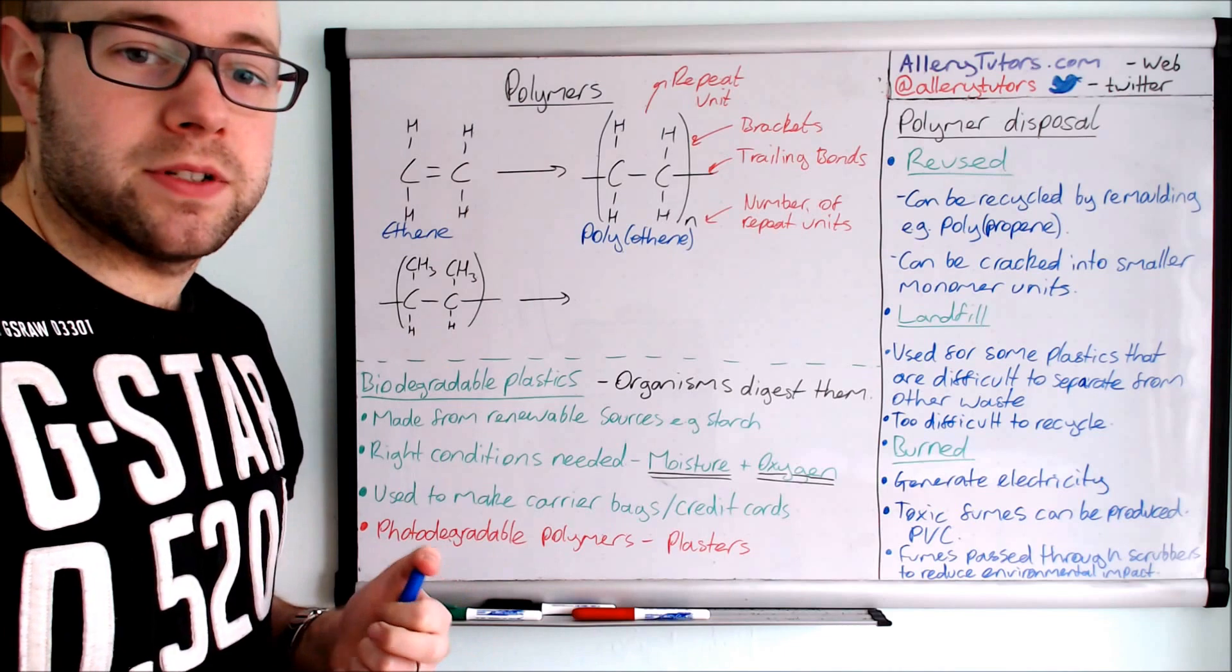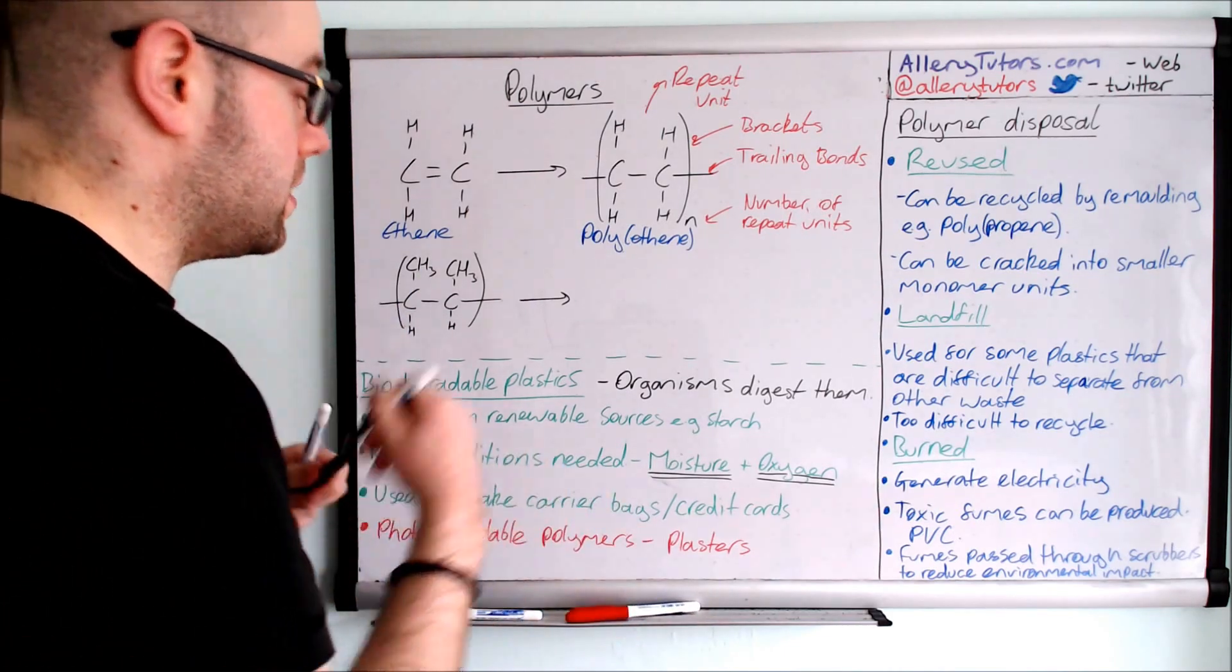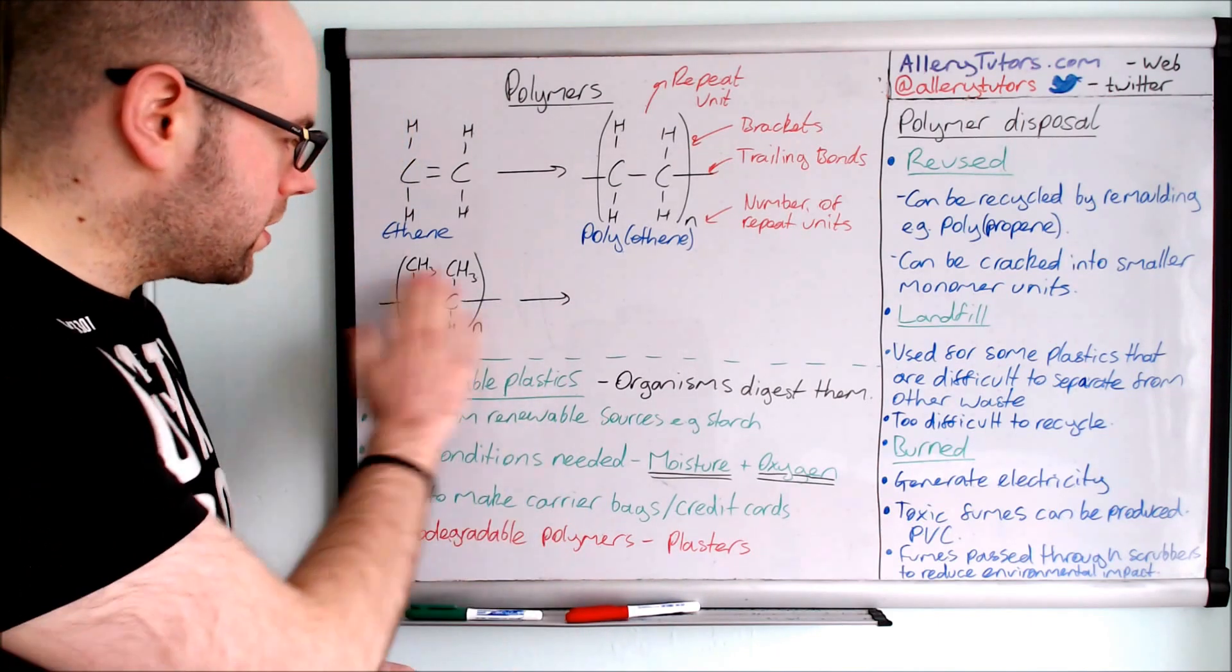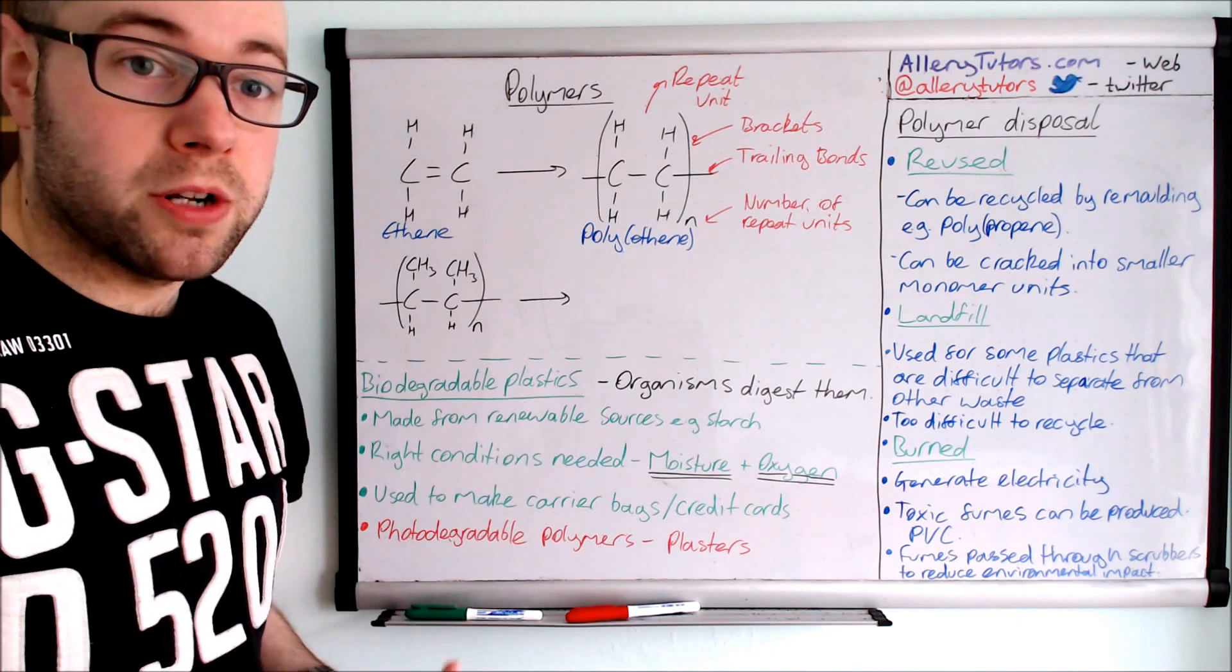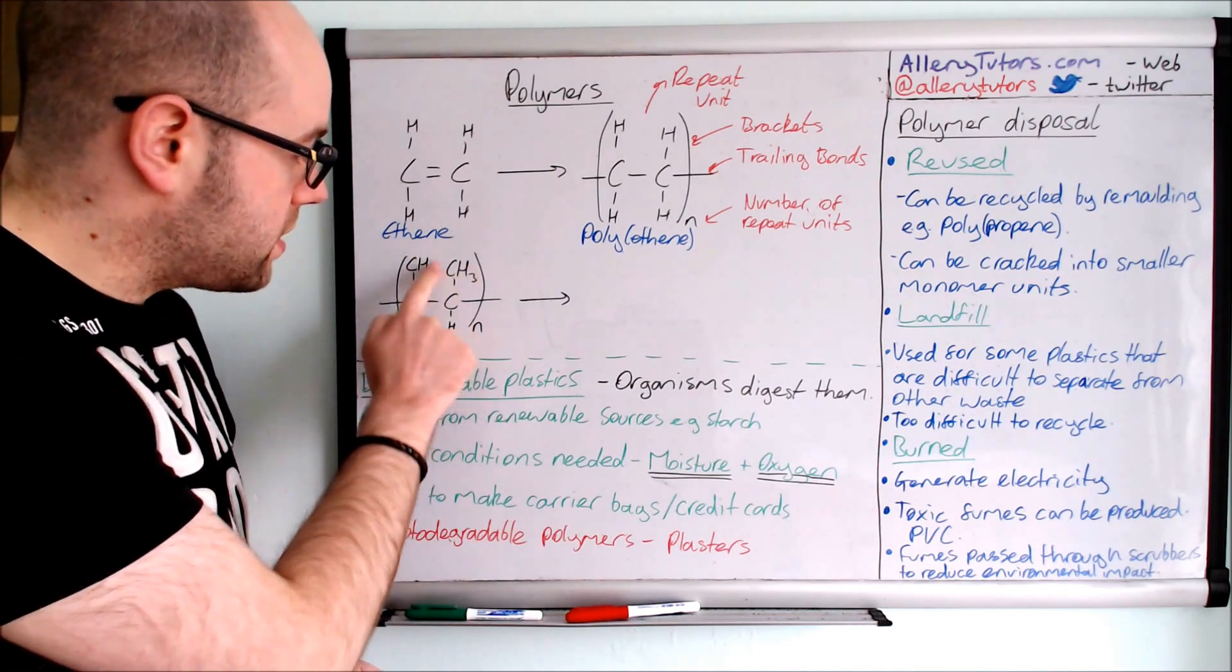You can also work backwards as well. So here we've got our polymer repeat unit, and we're going to put N on there to show this is repeating a number of times. And we can have a look at this and we can try and work out what the monomer unit was and work backwards.